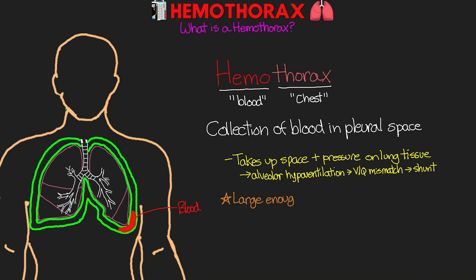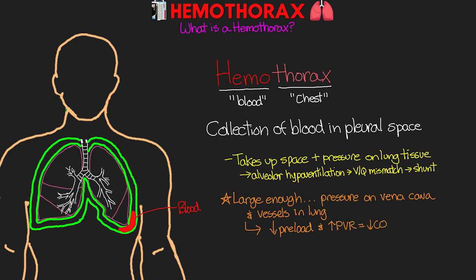If the hemothorax is large enough, it can also put hydrostatic pressure on both the vena cava and the vessels in the lung tissue itself. This decreases preload and also increases our pulmonary vascular resistance — the afterload on the right side of the heart — and can lead to decreased cardiac output, hemodynamic instability, and potentially cardiac arrest. This is something we refer to as tension hemothorax, very similar to our tension pneumothorax.